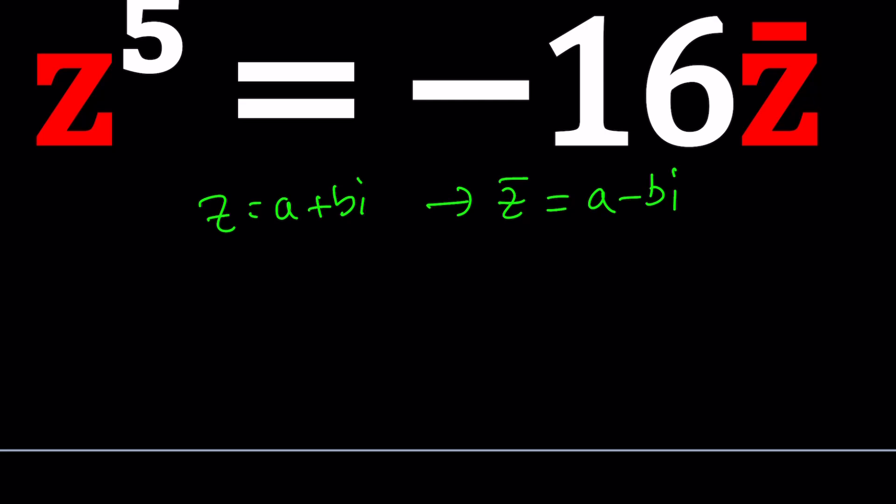And this is kind of nice because this is something we can kind of plug in, right? So I can replace Z with A plus B I, raise it to the fifth power and then on the right hand side I can take A minus B I and not raise it to any power because it's not raised to any powers.